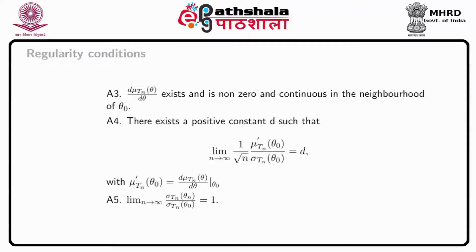Assumption A4: there exists a positive constant D such that (1/root n) times mu prime(T_n, theta naught) divided by sigma(T_n, theta naught) equals D, where mu prime(T_n, theta naught) is the derivative of mu(T_n, theta) with respect to theta evaluated at theta naught. Assumption A5: the limit as n tends to infinity of sigma(T_n, theta_n) divided by sigma(T_n, theta naught) equals 1.